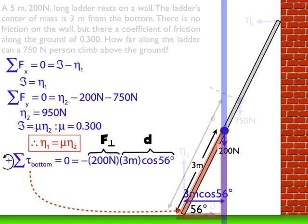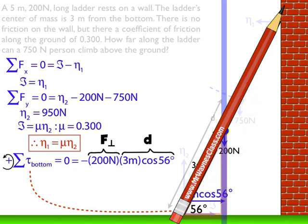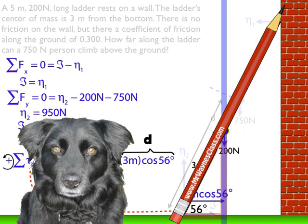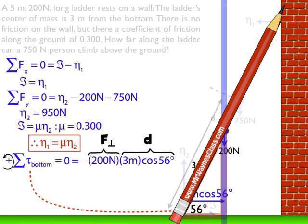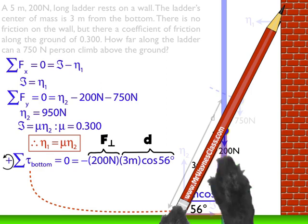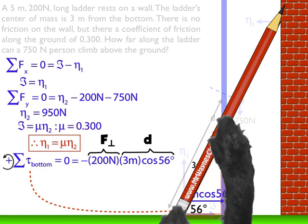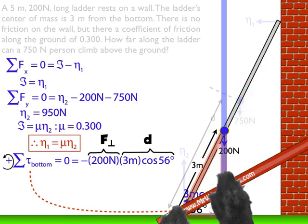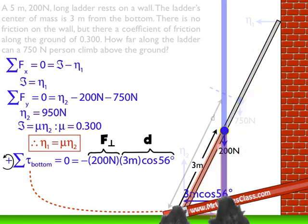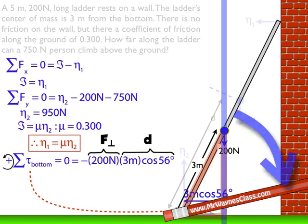The negative sign comes from the pencil test: place one hand at the fulcrum at the bottom, reach up to where the force is applied, and move in the direction of the force. I can visualize it rotating in a clockwise direction, and clockwise is defined as a negative torque. That's where the negative sign came from.